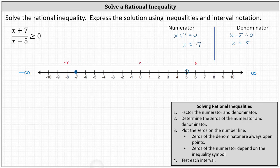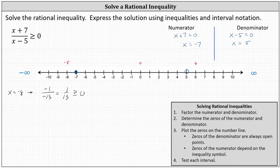When x equals negative eight, the numerator is negative eight plus seven, or negative one. The denominator is negative eight minus five, which is negative thirteen. This simplifies to positive one-thirteenth, and one-thirteenth ≥ zero is true. Therefore, the entire interval on the left is true, and we graph x less than or equal to negative seven as part of the solution.